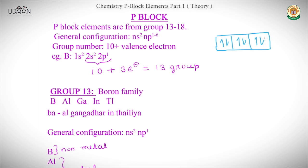To determine the group number of any element, we write its electronic configuration. Take Boron as an example: its configuration is 1s², 2s², 2p¹. Adding the valence electrons: 2 + 1 = 3, then 10 + 3 = 13. So the group number is 13.